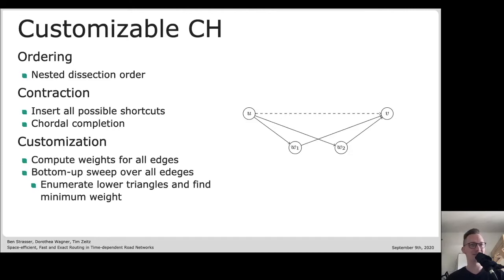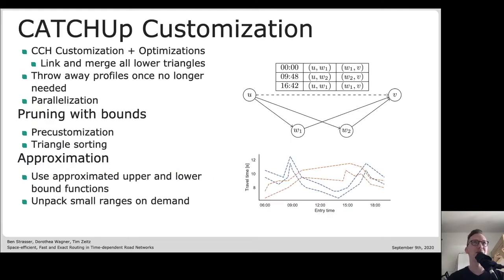We just insert all possible shortcuts, which boils down to chordal completion. These two phases we don't need to do any adjustments because they don't use the weights at all or in our case the travel time functions. Only the third phase of the preprocessing, the so-called customization, needs to deal with travel time functions and weights. In customizable contraction hierarchies, this third phase computes the weights for all edges by doing a bottom up sweep over all arcs UV and enumerating all possible lower triangles. For the catch-up customization we need to compute those tables for each arc.